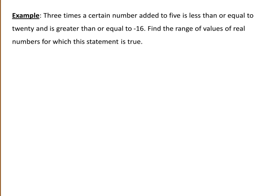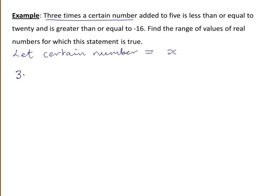We must use the information here to write a combined inequality statement. We will let the certain number be equal to x. Then 3 times the certain number is 3x, added to 5, so 3x plus 5 is less than or equal to 20.